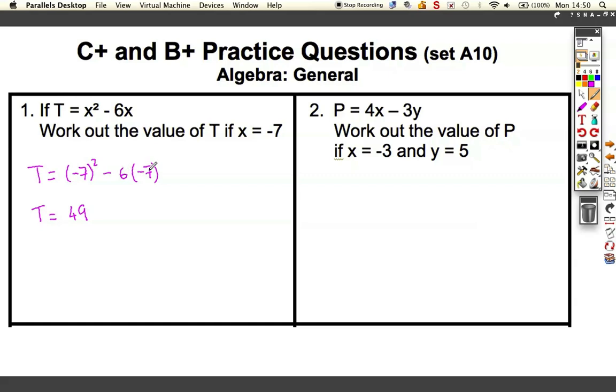Minus 7 squared is plus 49, the negative times the negative. And minus 6 times minus 7, well, 6 sevens are 42. One minus sign will make the answer minus. The other negative sign makes the answer positive. So really, when you're doing 49 plus 42, which is 91.